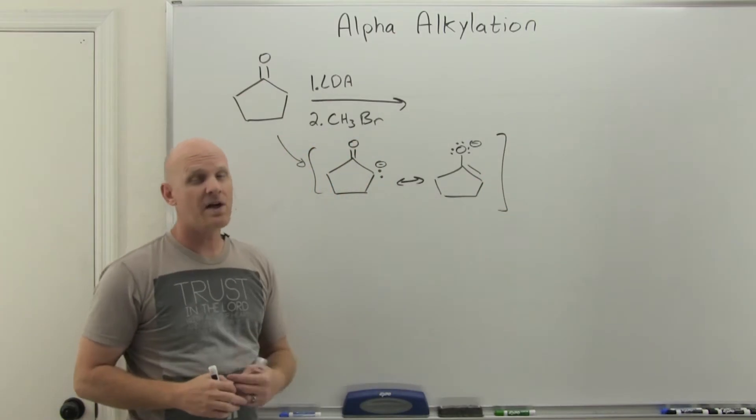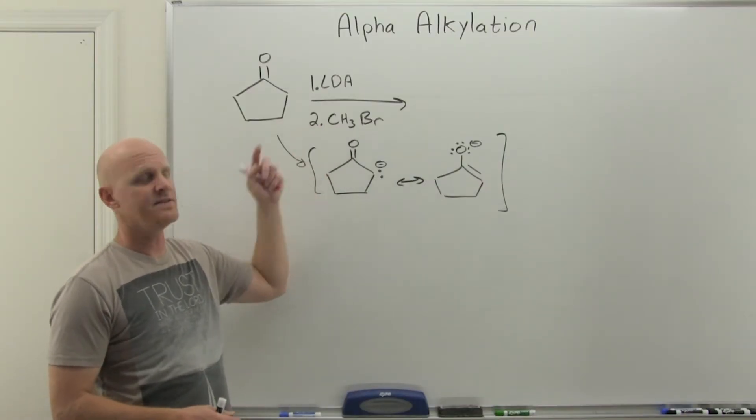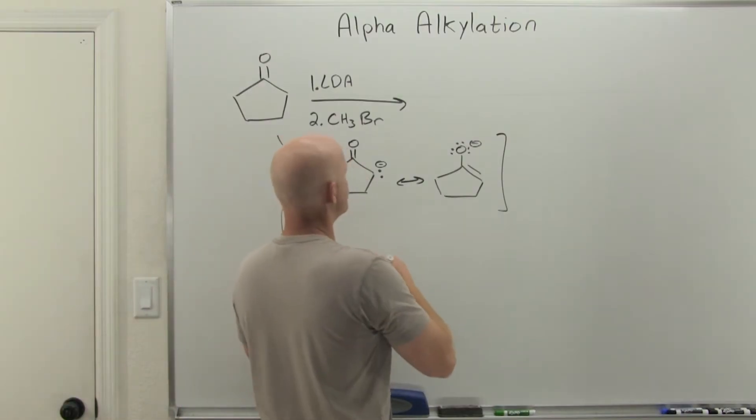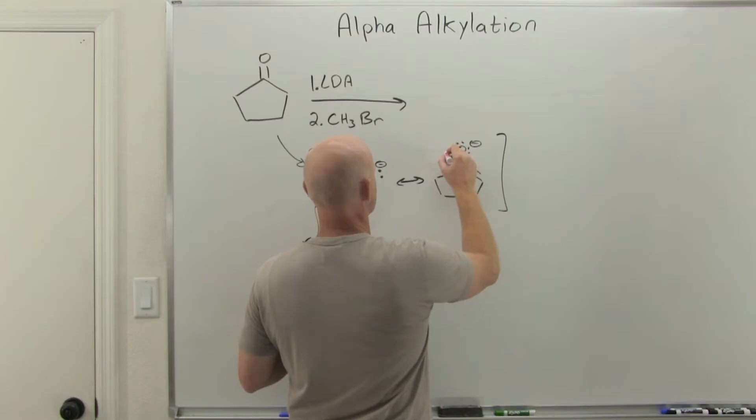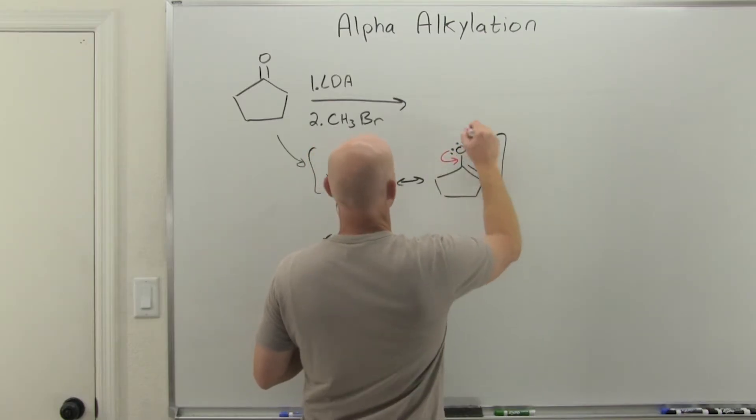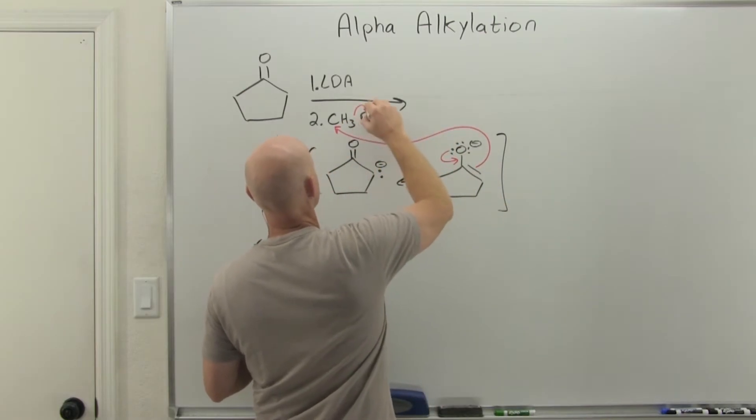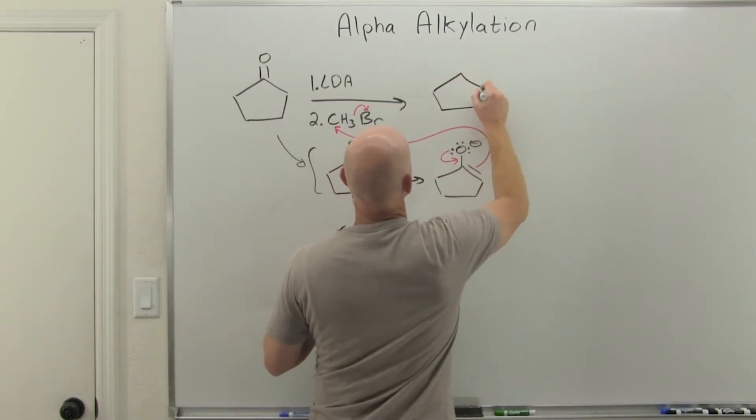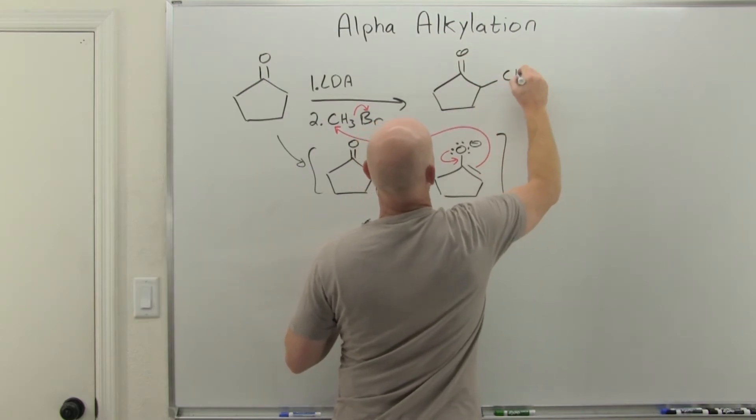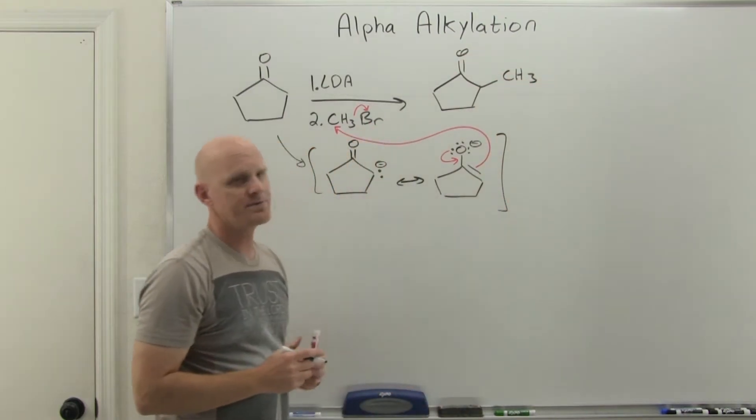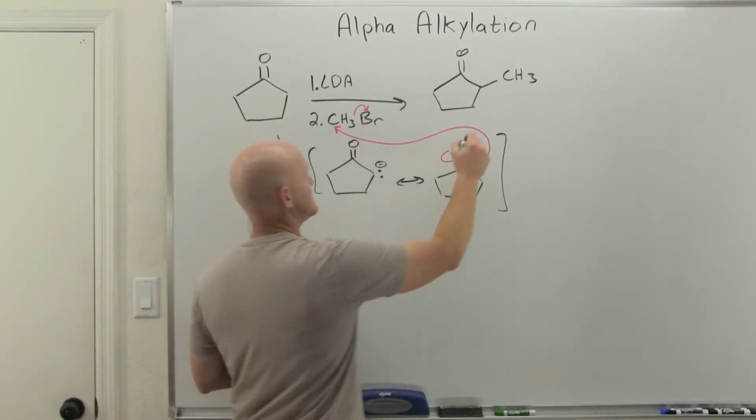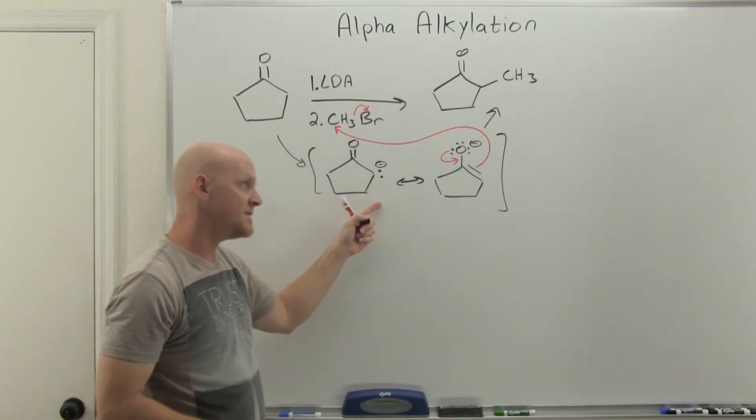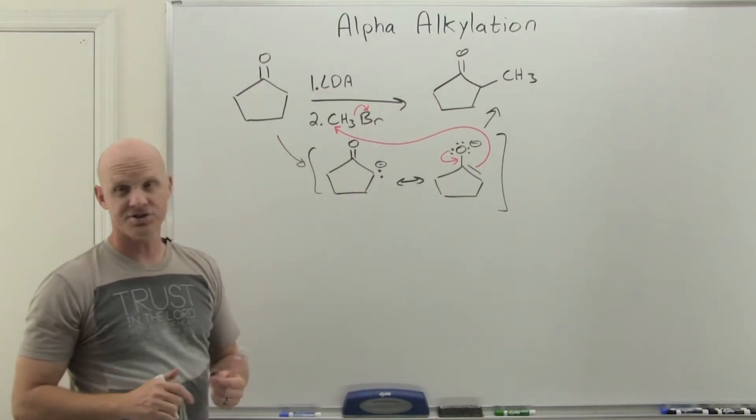He's a strong nucleophile, and we're just going to do SN2. We're going to do backside attack on an alkyl halide. Either a methyl or primary halide is preferred here. So in this case, we're just going to use methyl bromide. We're going to push these electrons down, and then these are going to come and make a bond to the methyl carbon, breaking the bond to the leaving group. And ultimately, attaching a methyl group to our alpha-carbon. Simple as that. It's just these two steps. Deprotonation by LDA forms your enolate, and then nucleophilic attack forms your alpha-alkylation product.